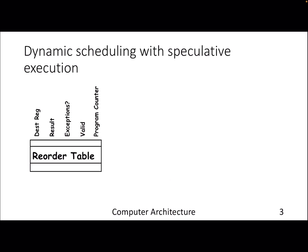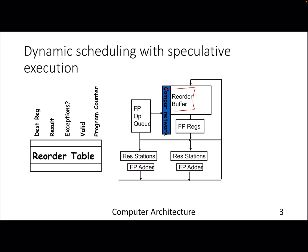The new structure is known as the Reorder Buffer, or ROB. In the issue stage we get the instruction from the instruction queue and issue it if there is a free reservation station and a free entry in the ROB — both must be free.